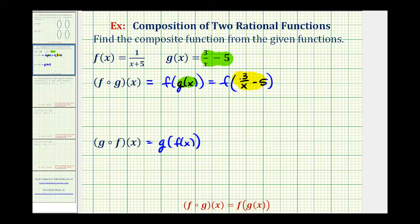And now this becomes the input into function f, so we'll substitute this quantity for this x here. And this will give us our composite function. We'll have one divided by the quantity three divided by x minus five, and then we still have plus five.